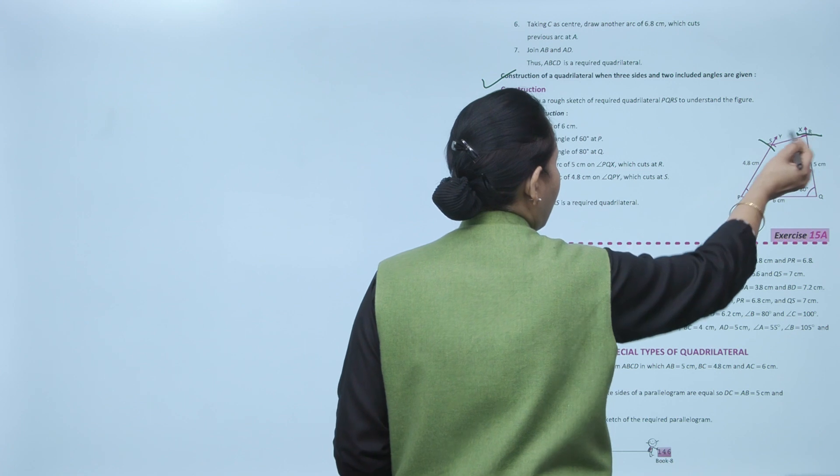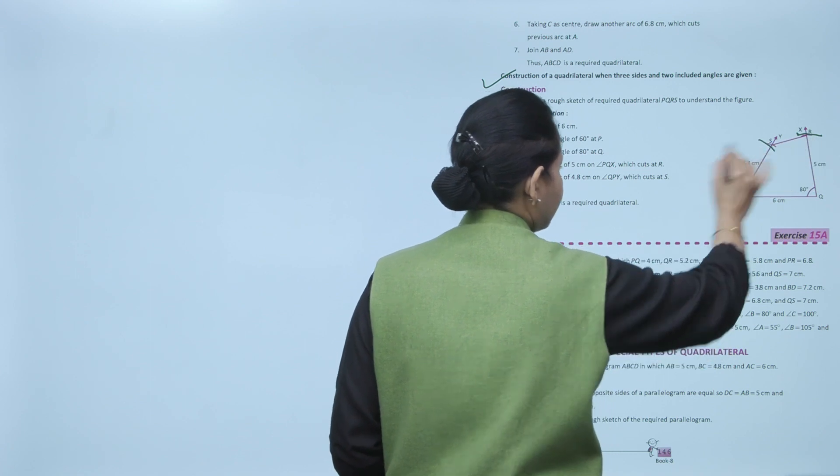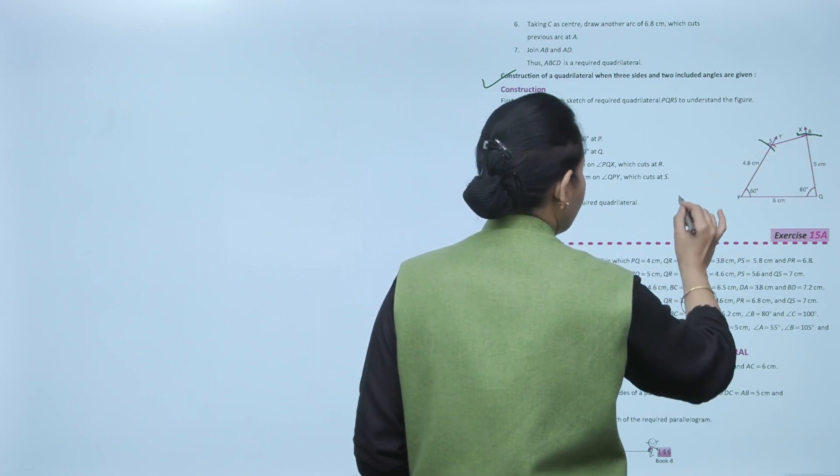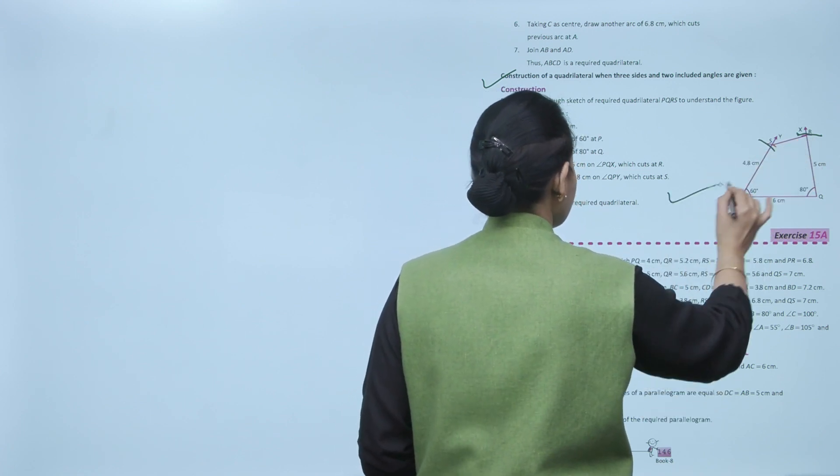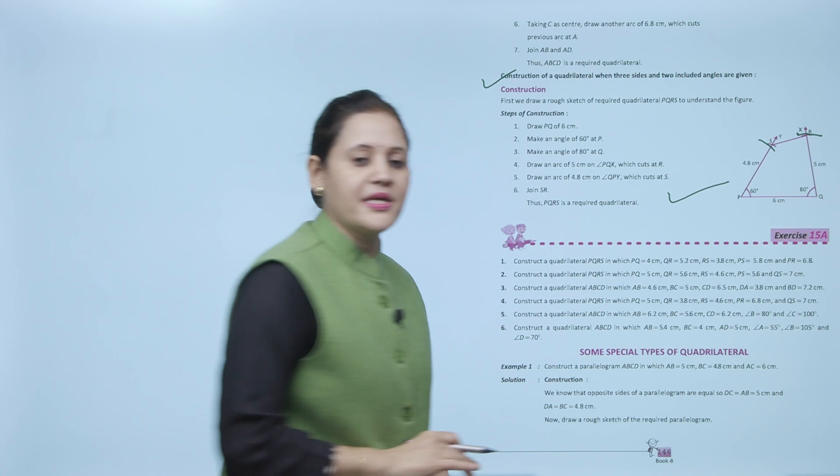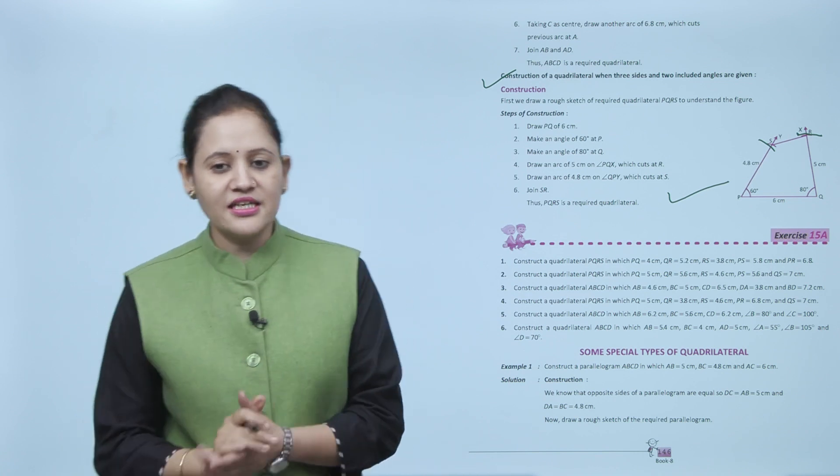This is point R and this is point S. This is our required quadrilateral PQRS.